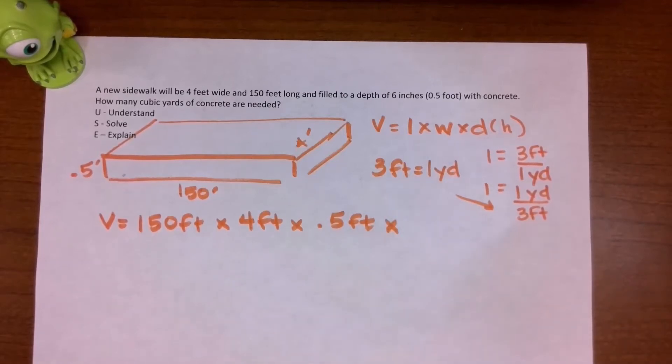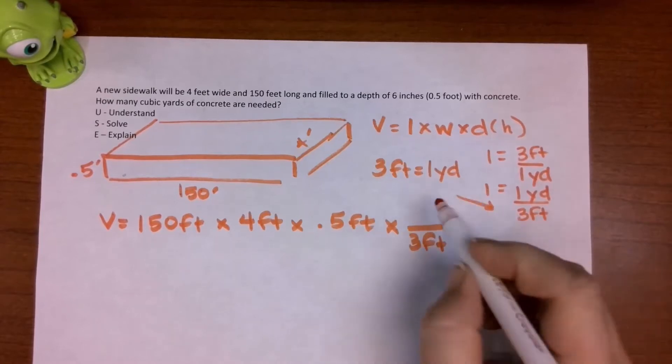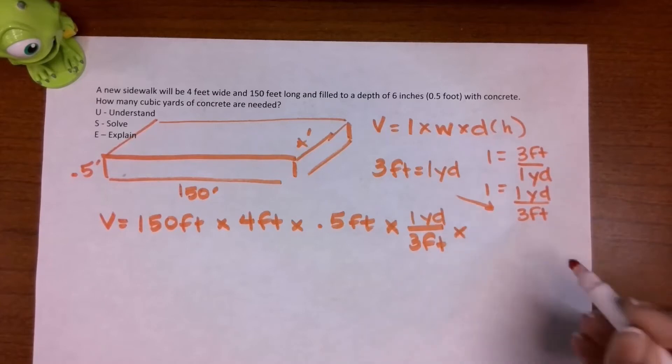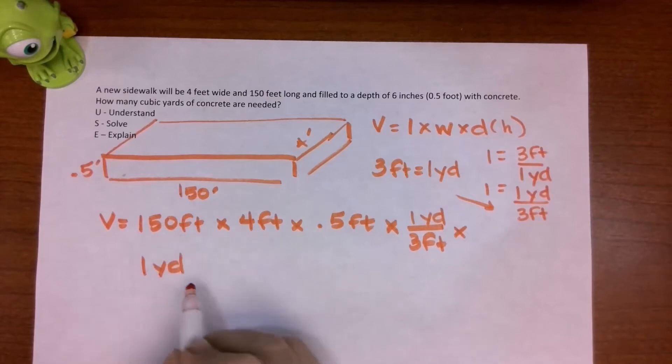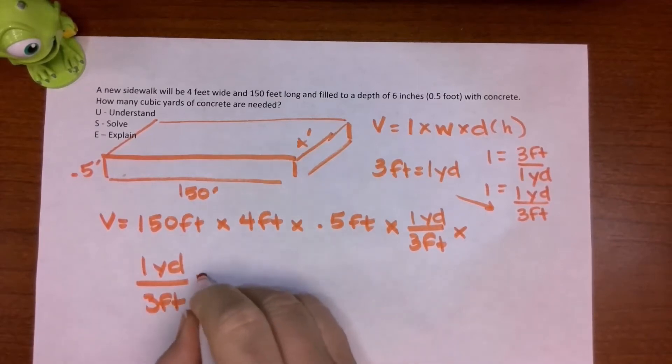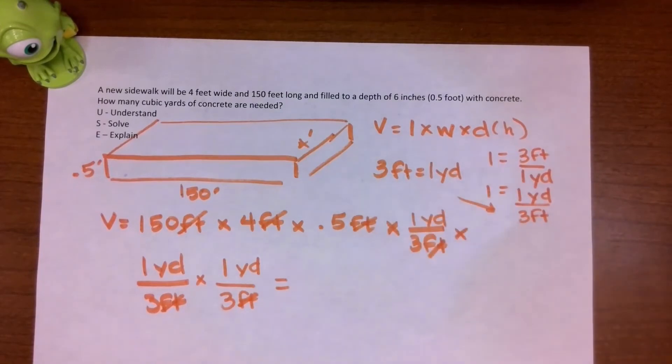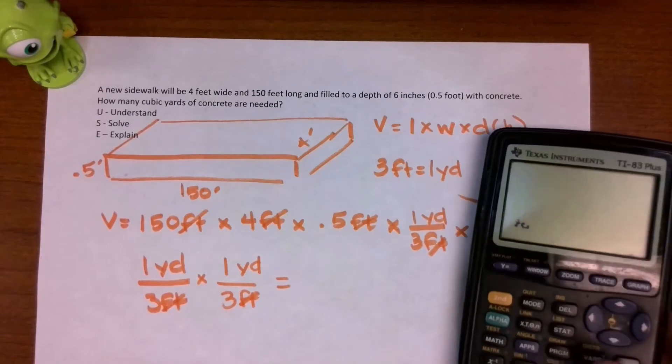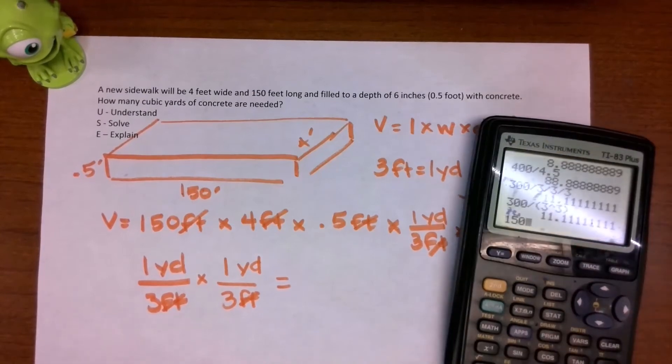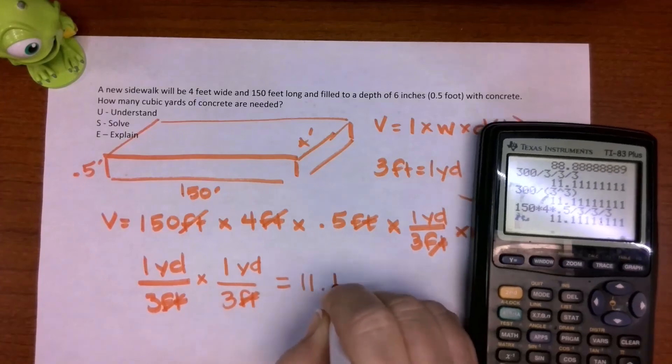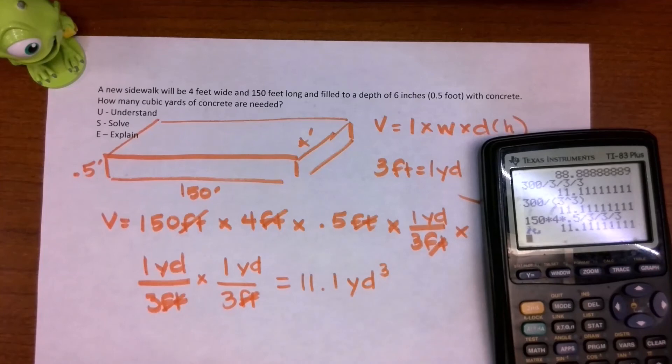So now we will do that times. Now we have to put the 3 feet in the bottom. 1 yard times, I'm going to go to the next line, 1 yard over 3 feet. And do it finally one last time, 1 yard over 3 feet. Now I'm going to go through and check all my units. This foot cancels with that foot. This foot cancels with that foot. This foot cancels with that foot. And so now I can grab my calculator and work that out. So I'm going to have 150 times 4 times 0.5 divided by 3, divided by 3, divided by 3. And I get 11.1 yards cubed. And we normally would say that cubic yards.